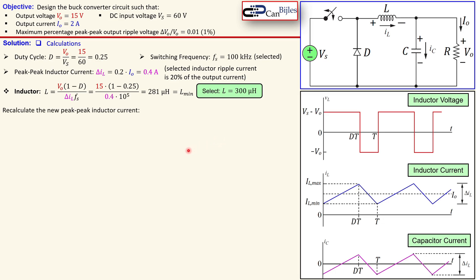Since we changed the inductor value, we need to recalculate the new peak-to-peak inductor current. Rearranging the expression with L in the denominator and using 300 microhenries gives us 0.375 amps, or 375 milliamps, instead of the original 400 milliamps.